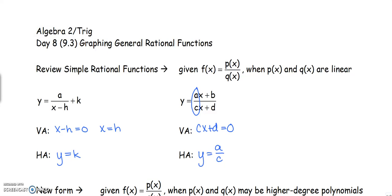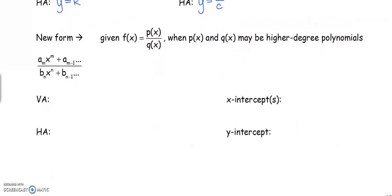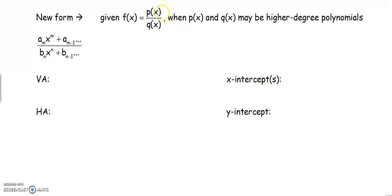So our simple functions are when we are dealing with linear equations on top and or on the bottom. When we get to the general form, the only difference is that p and q — whatever equation is on top and whatever equation is on the bottom — instead of being linear, they can be any higher degree polynomial. They could be constants with no variables, linear, quadratic, or cubic. This is just a way of saying you have different forms on top and bottom.